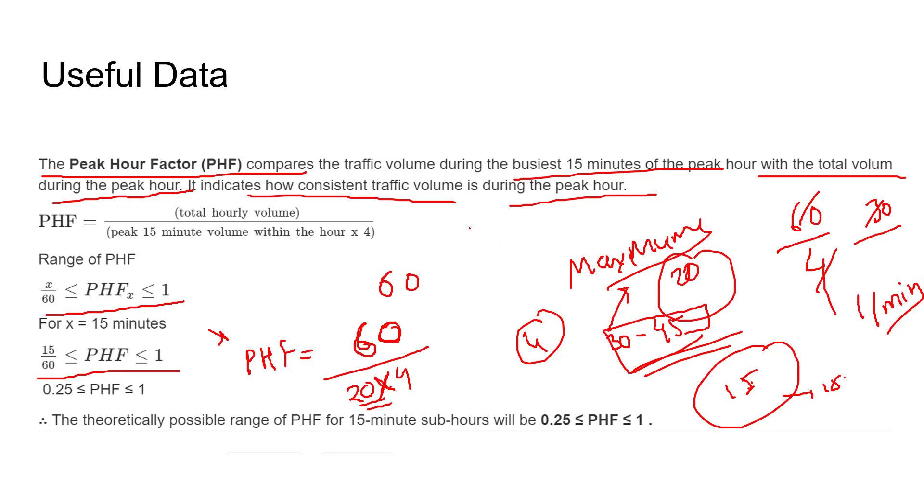Ideally it could be 1, because if I tell you 15 vehicles traveled in 15 minutes in all four slots, so the equation will be 60 divided by 15 into 4, so it will be 1.